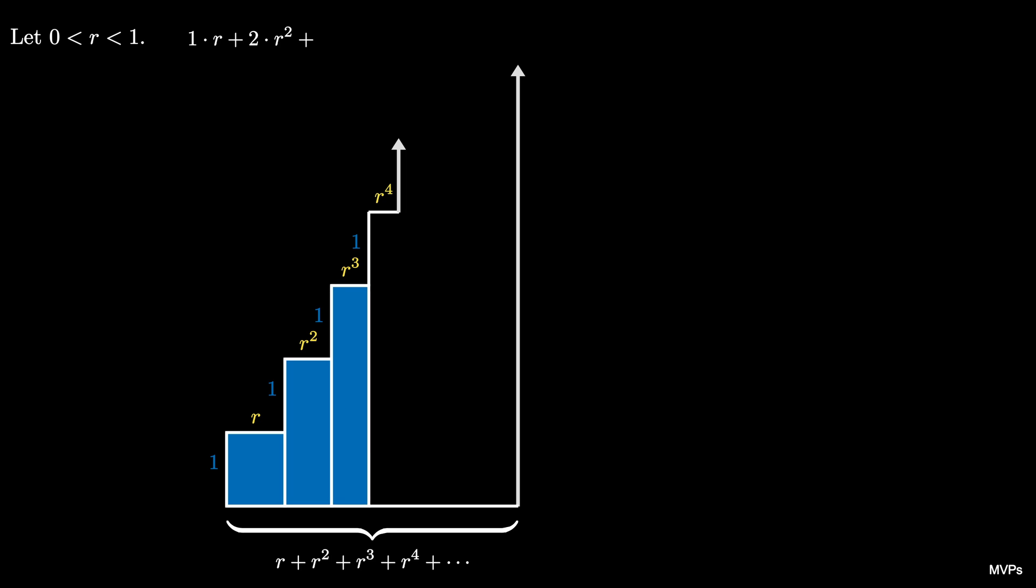The third one has height 3 and width r cubed so it encloses an area of 3 times r cubed, and the next one encloses an area of 4 times r to the 4th. We continue this process forever with narrower and narrower rectangles giving an infinite sum for the area.